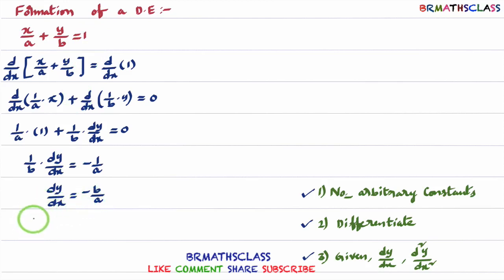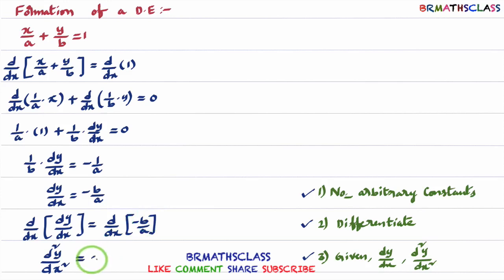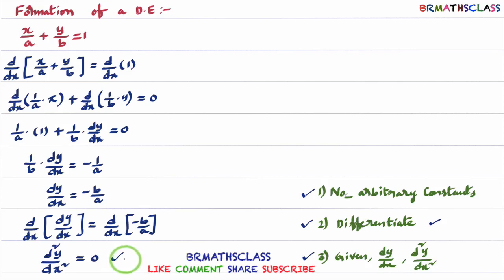I differentiate dy/dx = −B/A with respect to x on both sides again for the second time. d/dx of (dy/dx) = d/dx of (−B/A). The left side gives d²y/dx². Since B and A are both constants, B/A is constant and −B/A is also constant. Derivative of a constant is 0. So d²y/dx² = 0. Second time differentiation is complete. Observing the result: A and B are both eliminated, so d²y/dx² = 0 is the required differential equation of this curve.